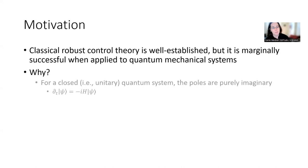However, for quantum systems, you have typically a closed or unitary evolution. And in this case, the poles are purely imaginary. They lie on the imaginary axis. The system is governed by the time-dependent Schrodinger equation, which I have written here, where h is the Hamiltonian of the system, and psi is the quantum state, which is written in Dirac ket form. This basically just represents a vector.